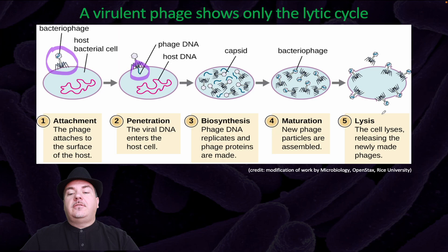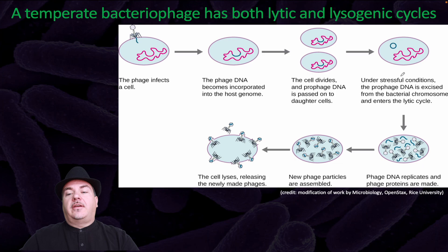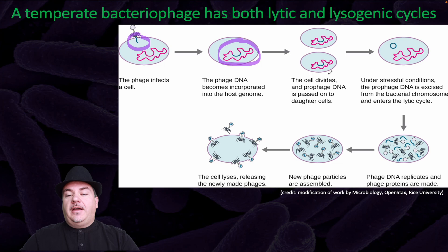A temperate bacteriophage has both lytic and lysogenic cycles. In the lysogenic cycle, the phage infects a cell but the phage DNA becomes incorporated into the host genome — the chromosome of the bacteria. The cell divides, so the prophage DNA is passed on to both daughter cells. Under stressful conditions, the prophage DNA is excised from the bacterial chromosome and enters the lytic cycle.